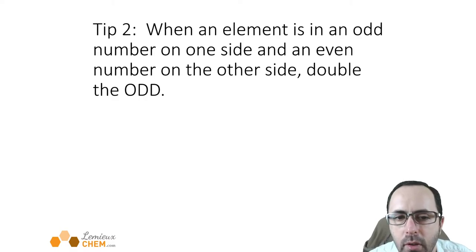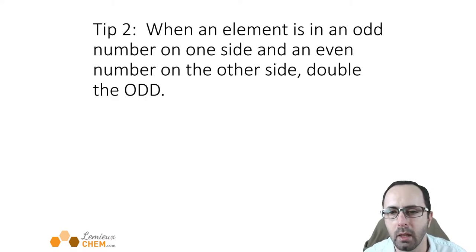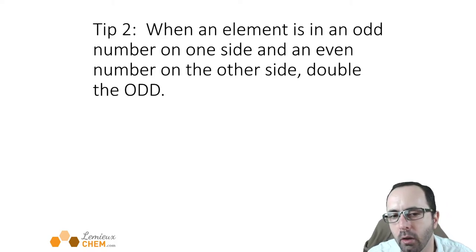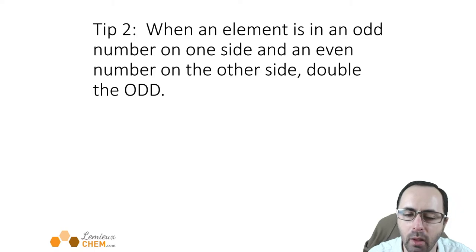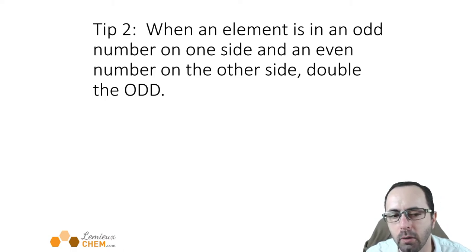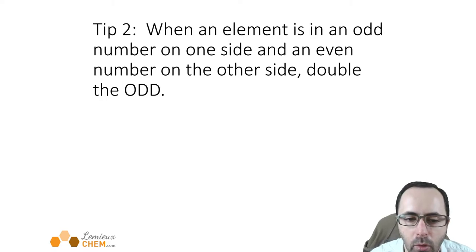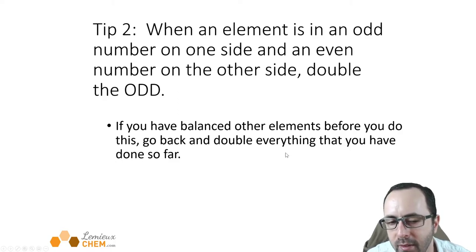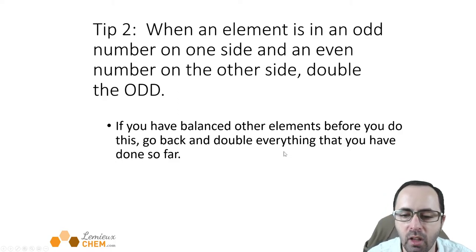Tip number two: when an element has an odd number on one side and an even number on the other, you will double the one with the odd coefficient. Sometimes no matter what coefficient you put, you'll have an even number of atoms on one side but an odd number on the other. If you've balanced other elements before you notice this even/odd problem, just double everything you've already balanced so far and that will fix your problem.